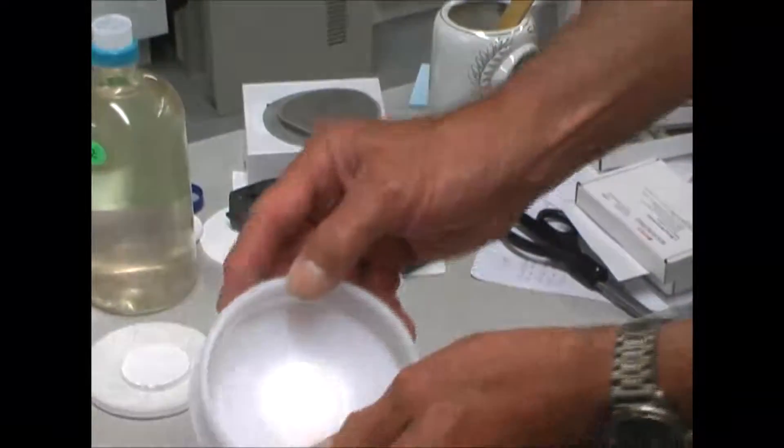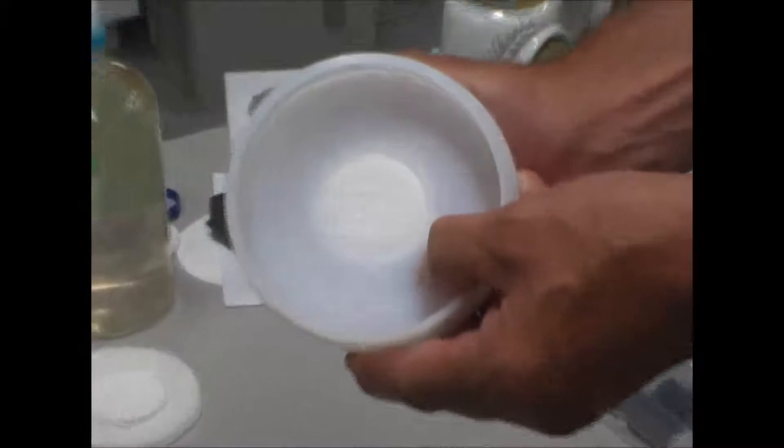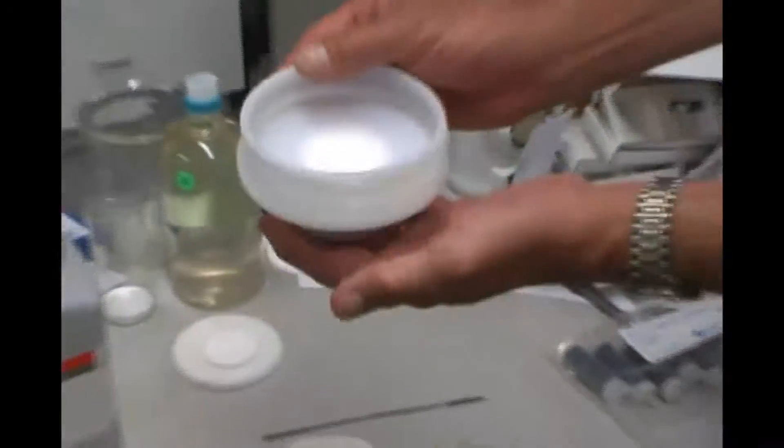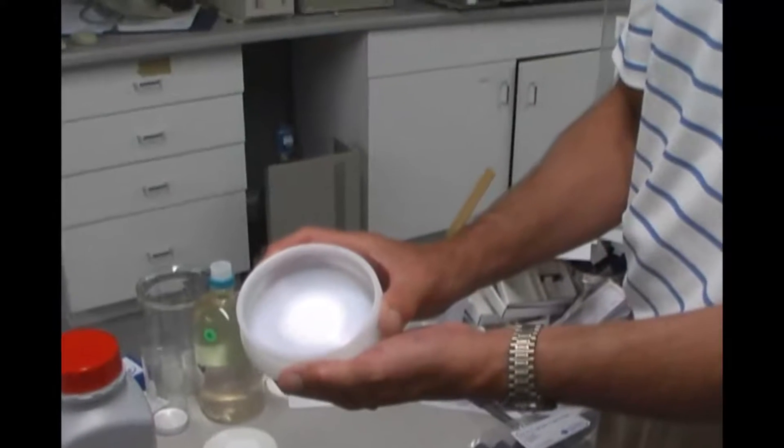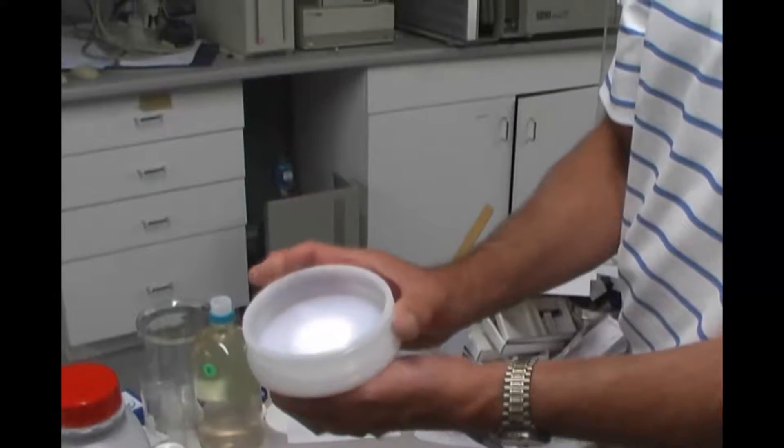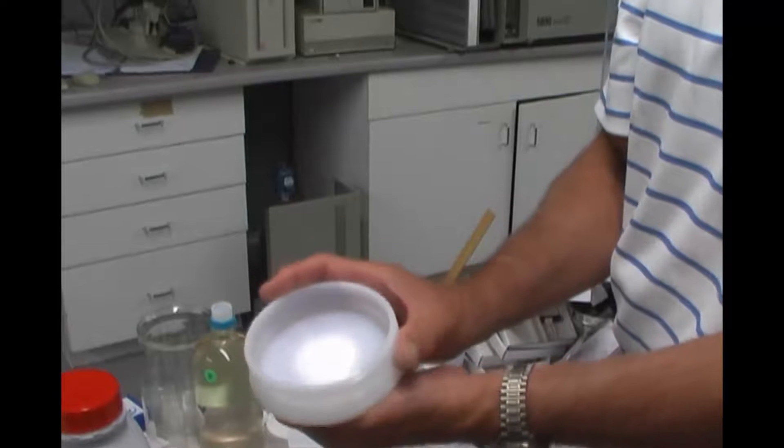But the important part is that the SPE disc, in this case the C18 disc, is nice and clean. So it shows that with this style holder of protecting the analytical disc with two pre-filters on the top, we can handle very dirty samples that have high particulate content.